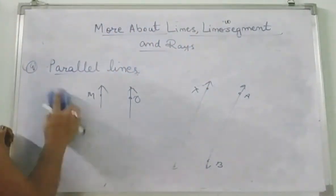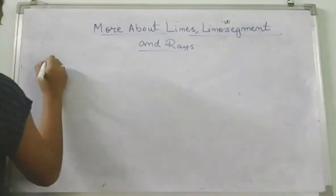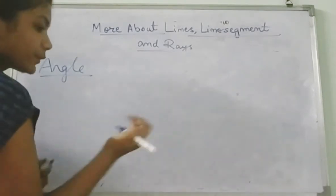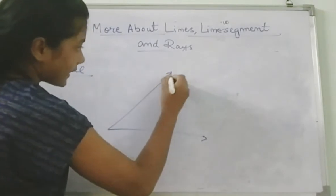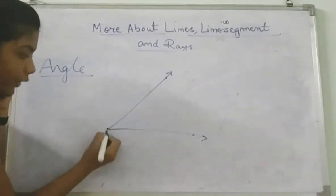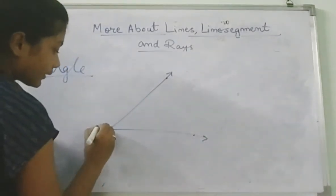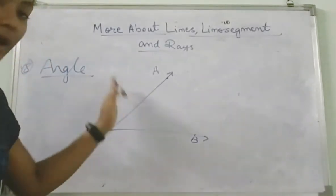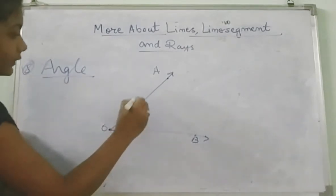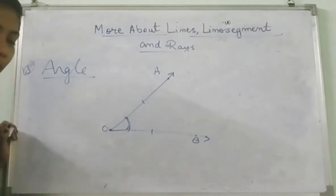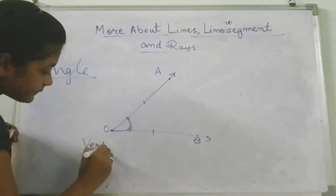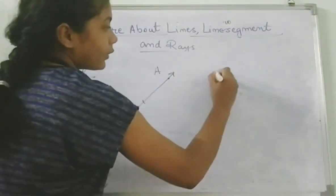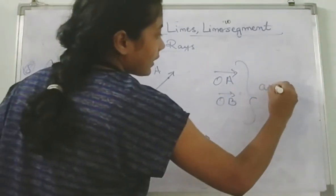Next one is angle. When two rays or line segments meet at a common point, it forms an angle. These two rays O, A and O, B are meeting at the point O, forming an angle. This point O is called the vertex, and ray OA and ray OB are called the arms of the angle.